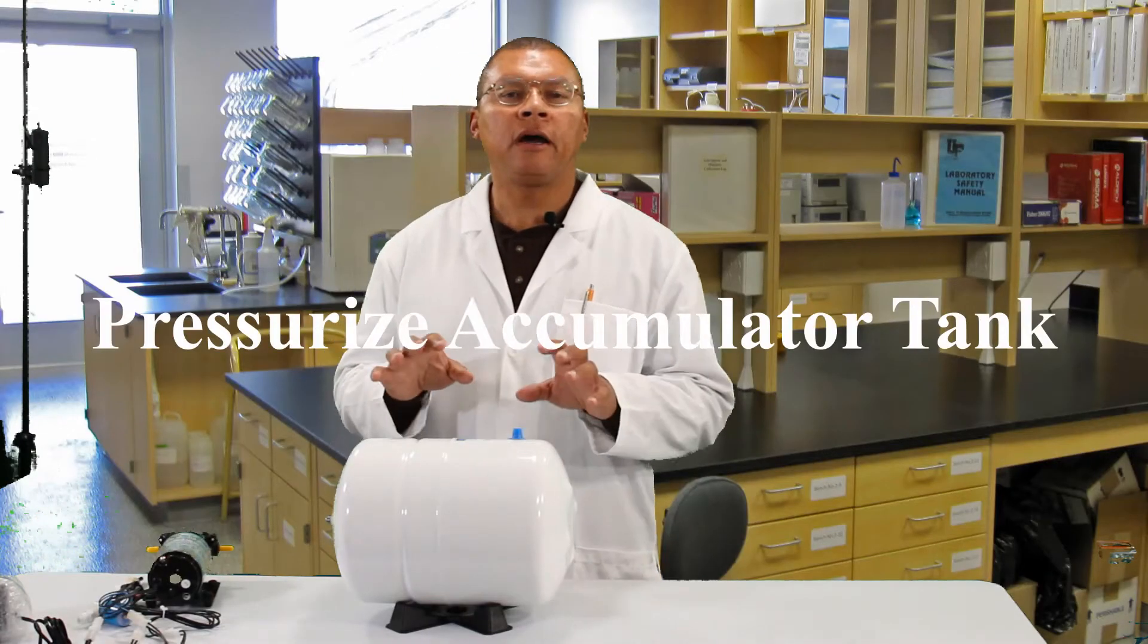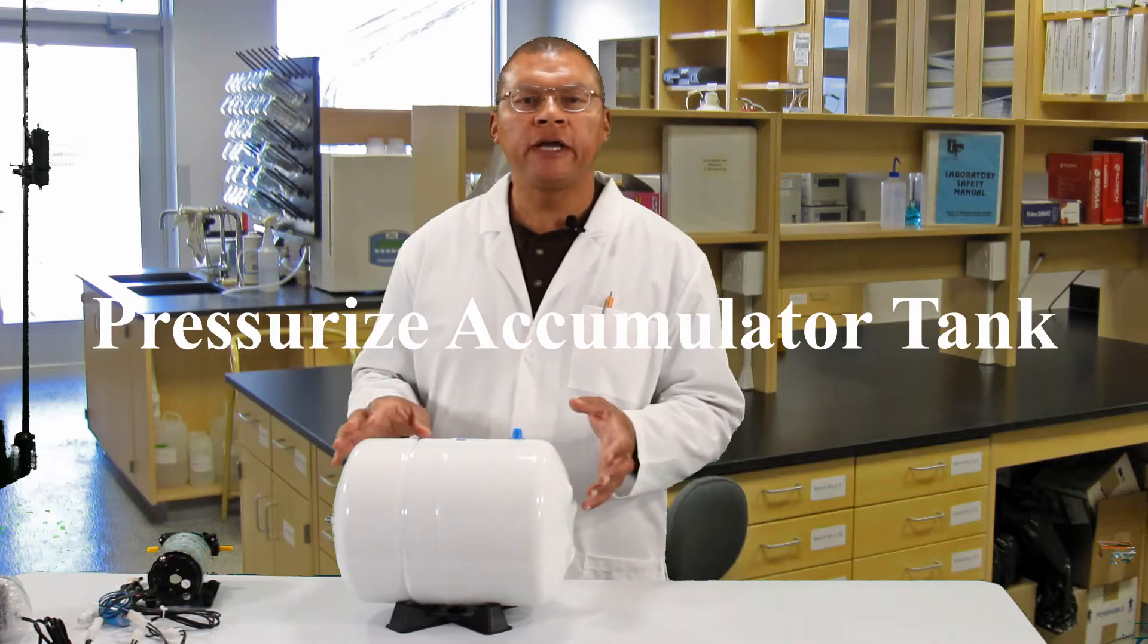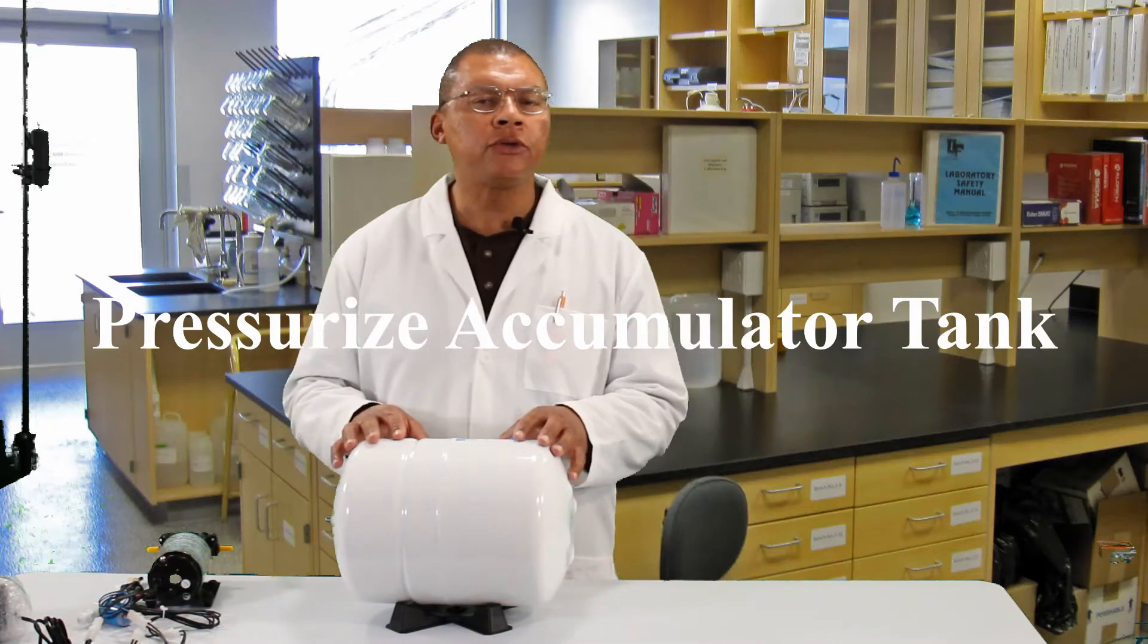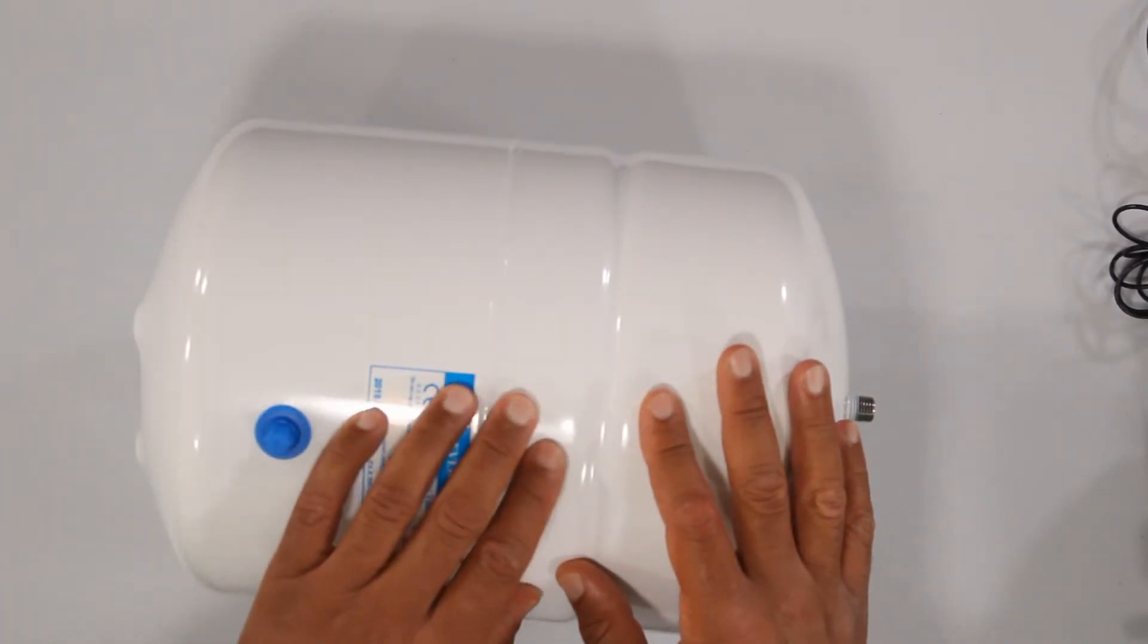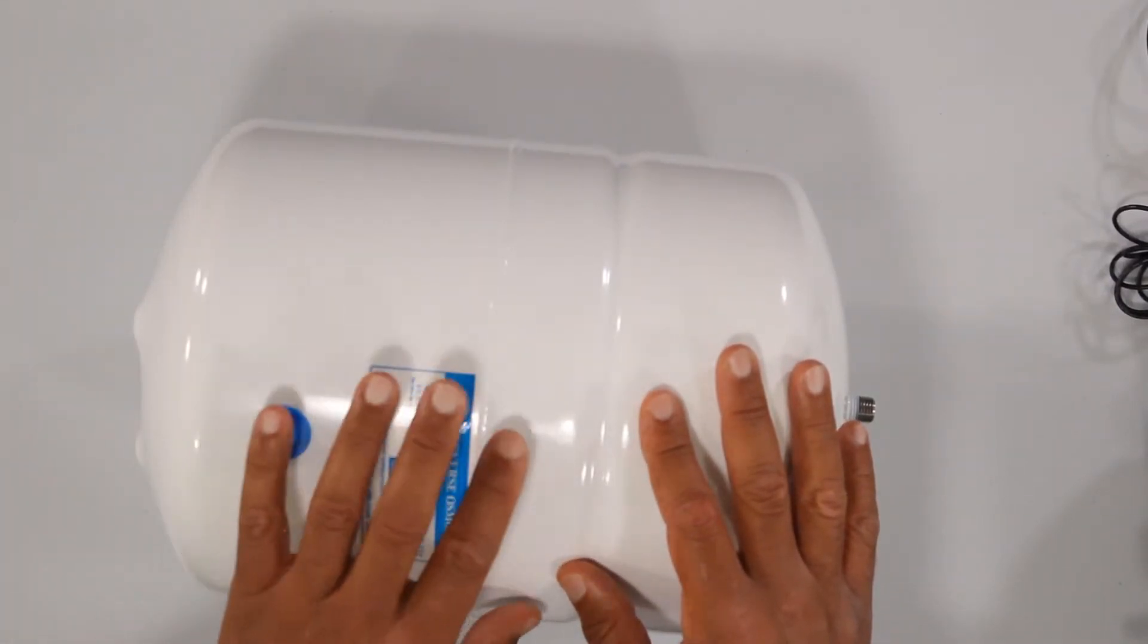Okay, the next component will be our accumulator tank or pressure tank. These tanks are commonly used on homes that are on well water or in RVs to maintain constant pressure on their pipes.